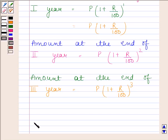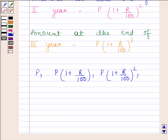We can see that principal (that is P), then amount at the end of first year, then second year, then third year—with terms P into 1 plus R by 100 whole square, P into 1 plus R by 100 whole cube, and so on—they form a GP.